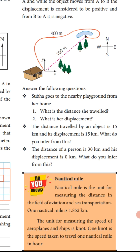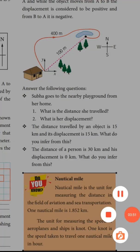Next, nautical mile. The nautical mile is the unit for measuring distance in the field of aviation and sea transportation. One nautical mile is 1.852 kilometers.